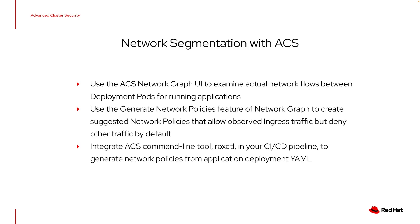Advanced Cluster Security provides a number of features to help with building good network segmentation policies. We'll use the network graph user interface to examine actual network flows between deployment pods — ACS examines running applications, looks at connections they're initiating or receiving, and shows that visual relationship on screen. We'll then use the generate network policies feature of the network graph to create suggested network policies that allow observed traffic but deny other traffic by default. Lastly, we'll use the ACS command line tool called RoxCTL, embedding it in a CI/CD pipeline to generate network policies directly from application deployment YAML files.